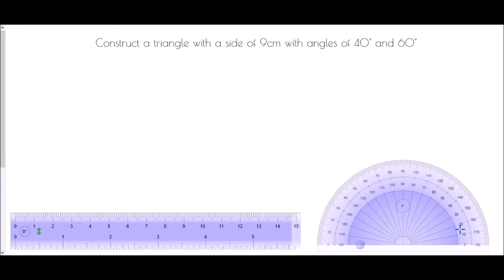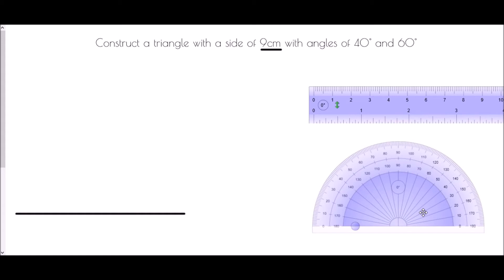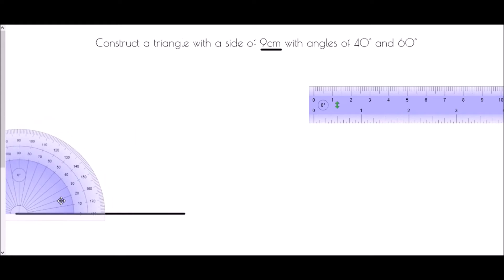Next I've been asked to construct a triangle with a side of 9 centimeters with angles of 40 degrees and 60 degrees. Again I'm going to need a ruler and a protractor. In this case I only have one side that has been given, therefore that is going to be the base of my triangle. So I'm going to draw a 9 centimeter line using my ruler, and then I'm going to take the ruler away and go to the protractor, because the triangle has an angle of 40 degrees and an angle of 60 degrees. I'm going to go to the left hand side of my line and measure 40 degrees.